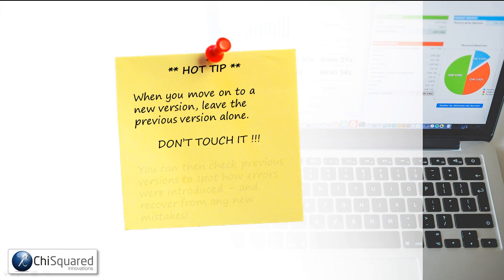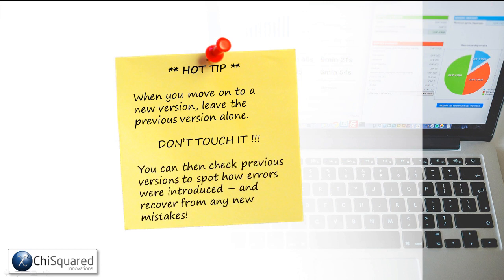By version controlling it, you're making sure you can always take a step backwards. So when you move on to a new version, you want to leave the previous version alone — don't touch it at all. You can then check how errors were introduced in the first place and recover from any new mistakes that you've made.